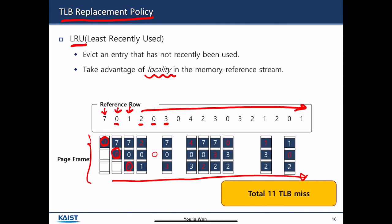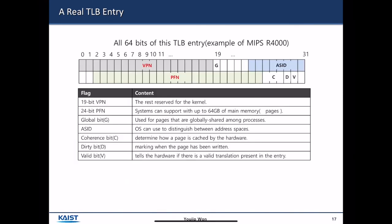In this slide, we see a real TLB entry — the TLB entry of MIPS R4000. A TLB entry is 64 bits. It has a 19-bit VPN and a 24-bit physical frame number. There is a flag used for pages that are globally shared among processes, and also an 8-bit address space identifier. Additionally, there are flags such as a valid bit and a coherence bit.